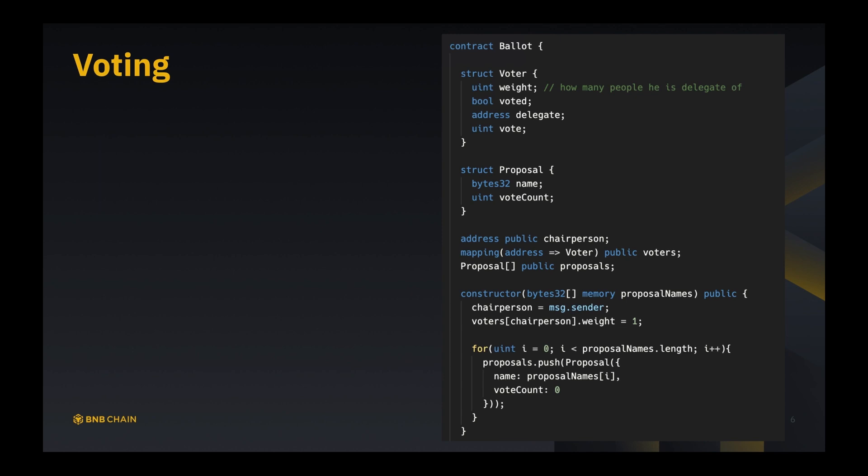Finally we have a list of proposals called Proposals. Upon construction we will take a parameter, and then we have a list of proposal names which is all the proposals that will be considered. We explicitly say it is in memory, not in storage, so that will be cleared up every time it's initialized. First we set chairperson to message.sender to be the administrator. Then we initialize the first and also the only voter at the current stage, which is the chairperson.